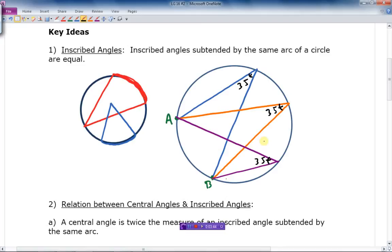So if an inscribed angle subtends the same arc, and what is that arc? The arc is right from there over to A and B. That subtends the same arc. It starts and ends at the same points. Then the angles are equal. That's the first point.